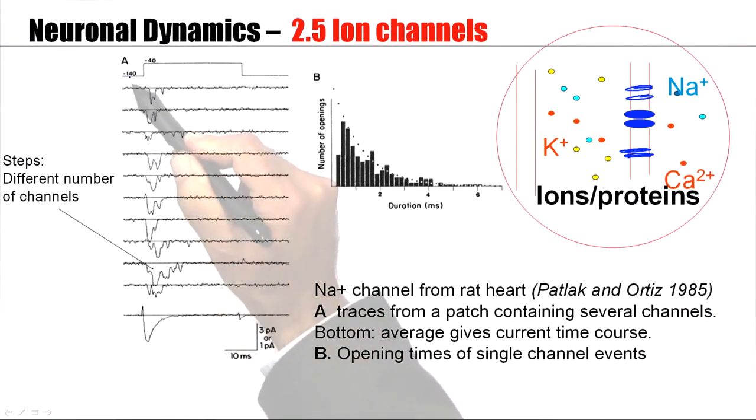The experimentalist injects a voltage step and observes the current. For example, here you see nice steps. That's the first step, maybe one channel is open. Big step, maybe two other channels are open, three in total, then only one, then two, then one, then again zero.